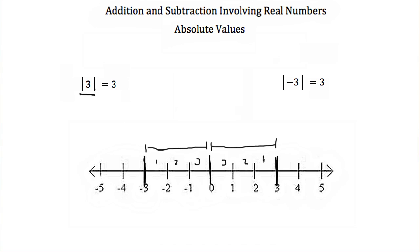An easy way to remember absolute values is to simply drop any sign. So the absolute value of positive 3 is positive 3, and the absolute value of negative 3 is again positive 3.